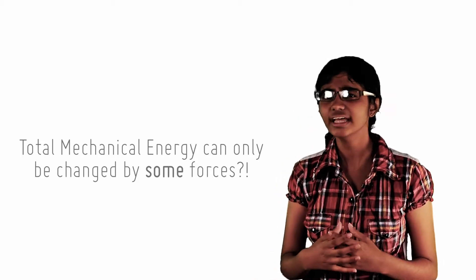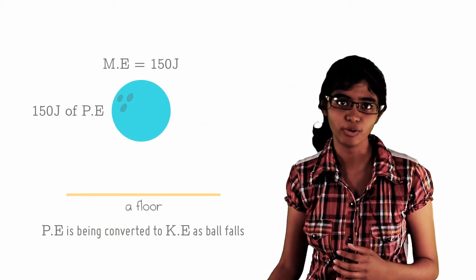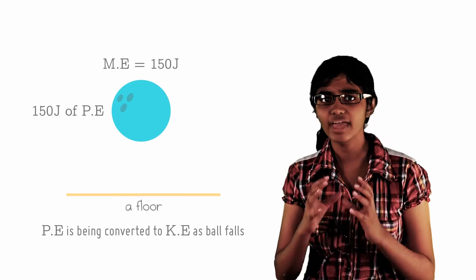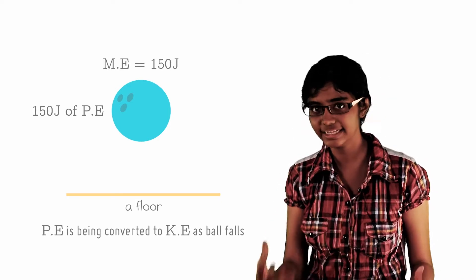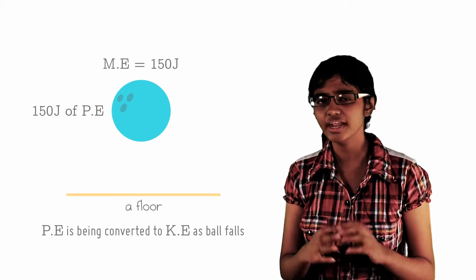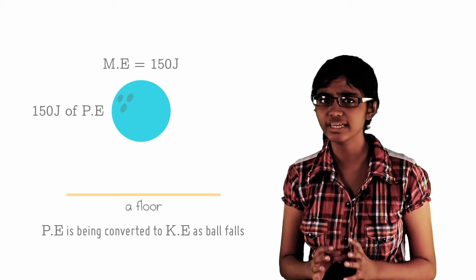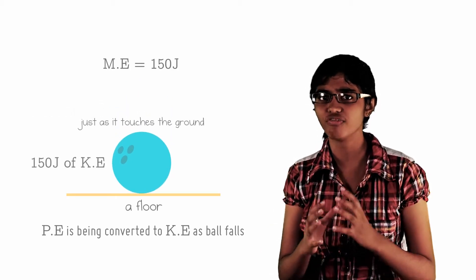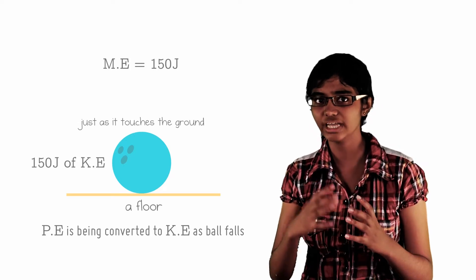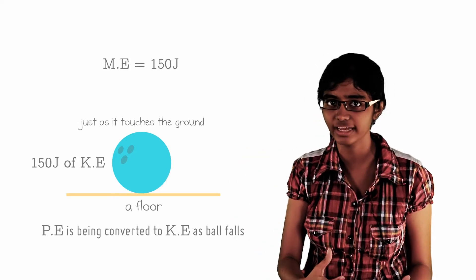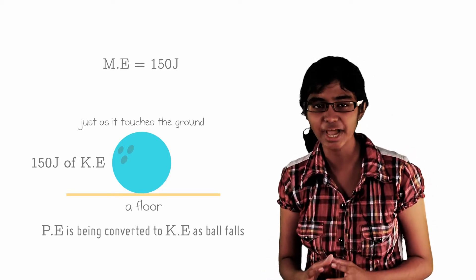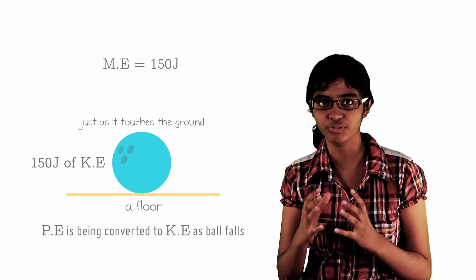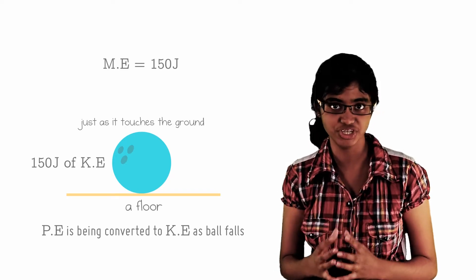As always when in doubt, let's go back to our dropping bowling ball. Very simply, the energy conversion in this object is from potential energy to kinetic energy. In an ideal scenario, all the, let's say, 150 joules of potential energy in the ball when it was held in my hand would be converted to 150 joules of kinetic energy when it reaches the ground. This means at any point in time, the total mechanical energy of the ball remains at 150 joules.